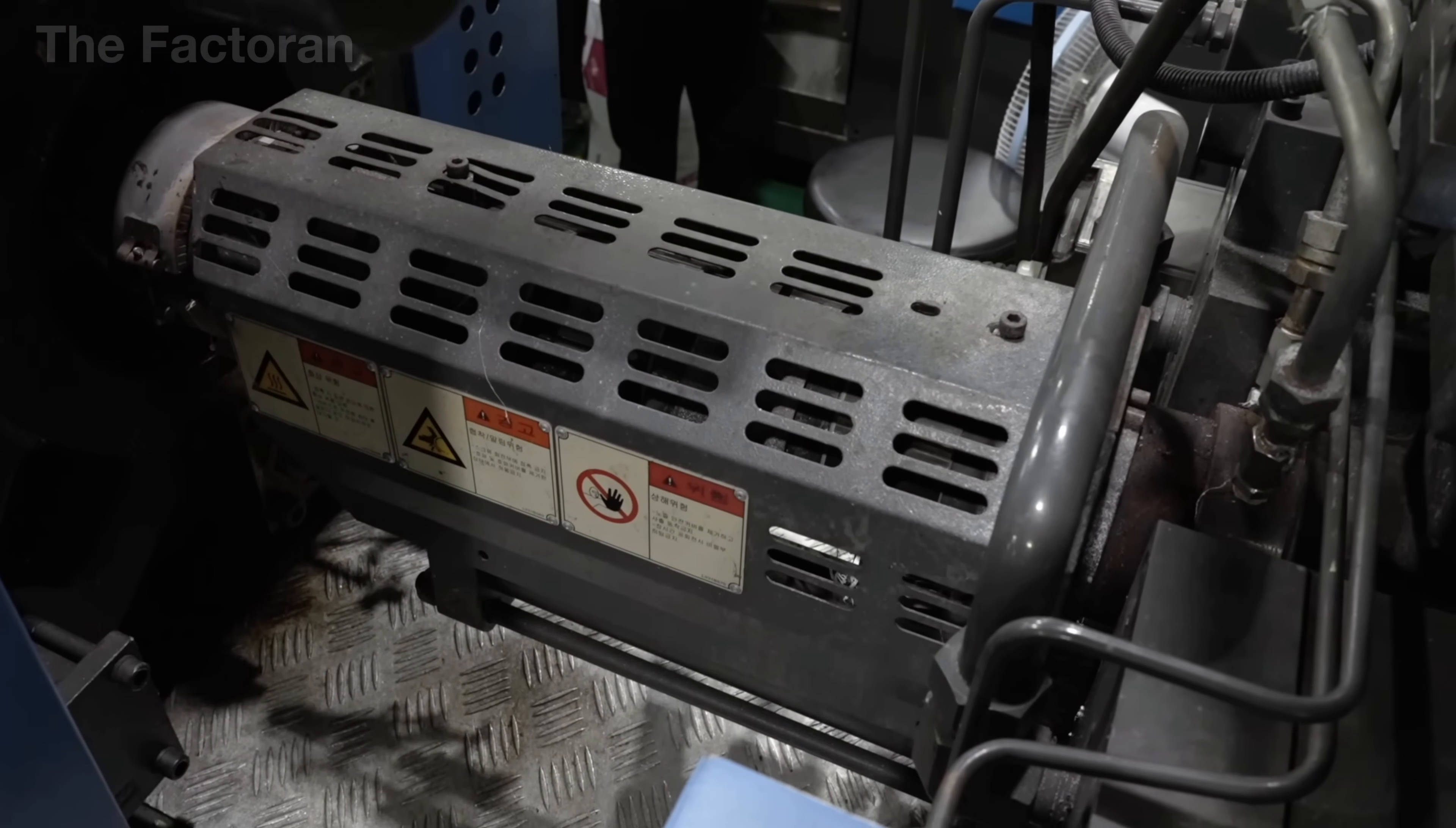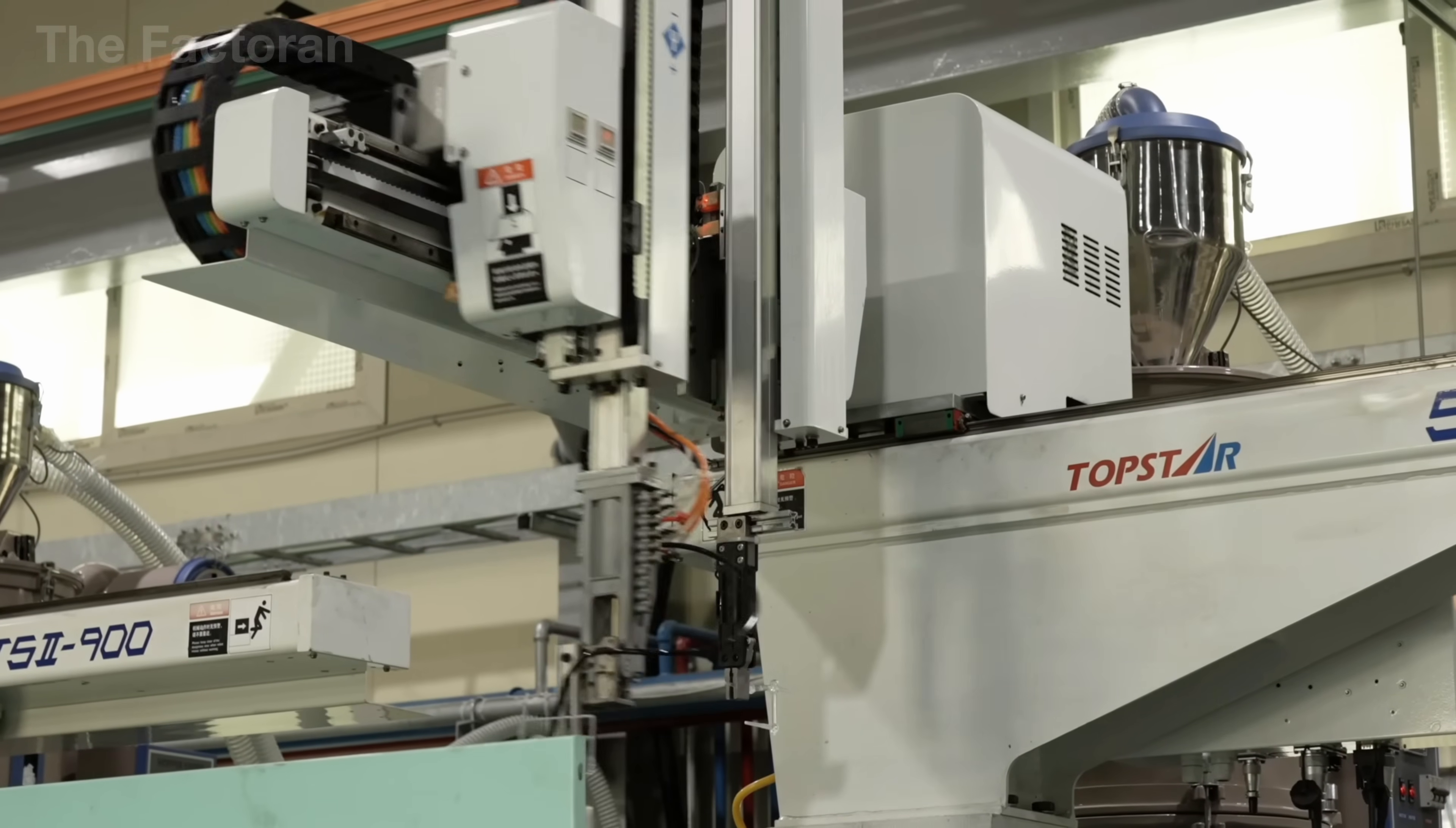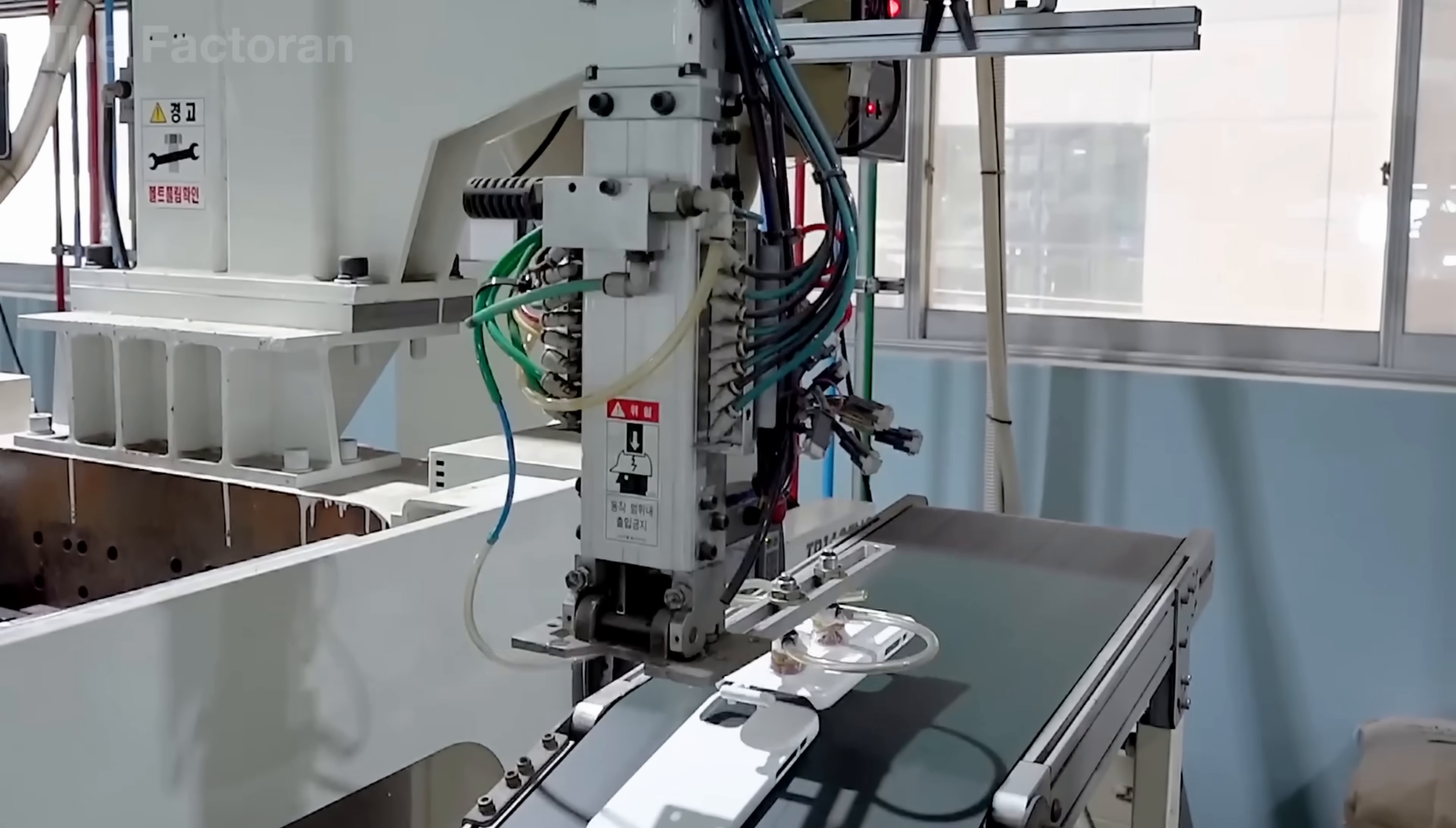This initial form then enters a series of meticulous finishing steps. Trimming removes any leftover flash, edges are rounded, and the case is polished to create smooth curves that hug the contours of the camera module, buttons, and speaker openings. Every detail is sculpted to ensure that the case will fit flawlessly onto the iPhone, providing both protection and ergonomic comfort.